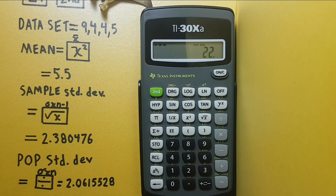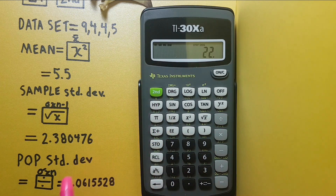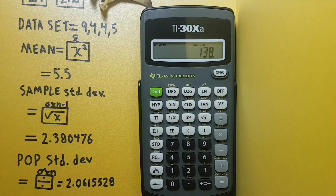And we can also find the sum of squares of our data set by pressing the second function right bracket, which gives us a sum of squares of 138.